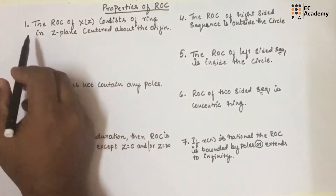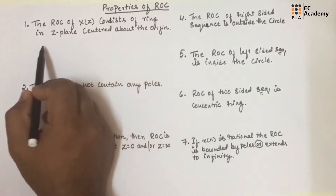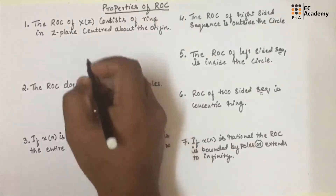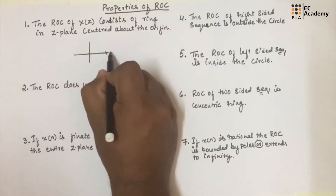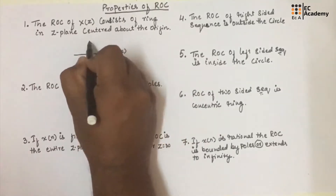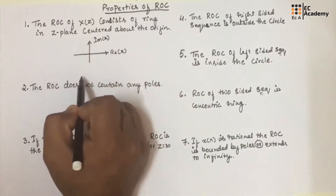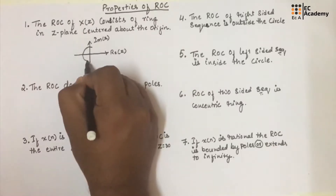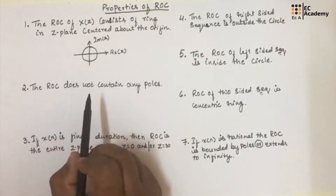The first property is the ROC of X(Z) consists of a ring in the Z-plane centered about the origin. In the Z-plane, the x-axis represents the real values of Z and the y-axis represents the imaginary values of Z. The Z-plane consists of a circle or a ring that is centered about the origin.